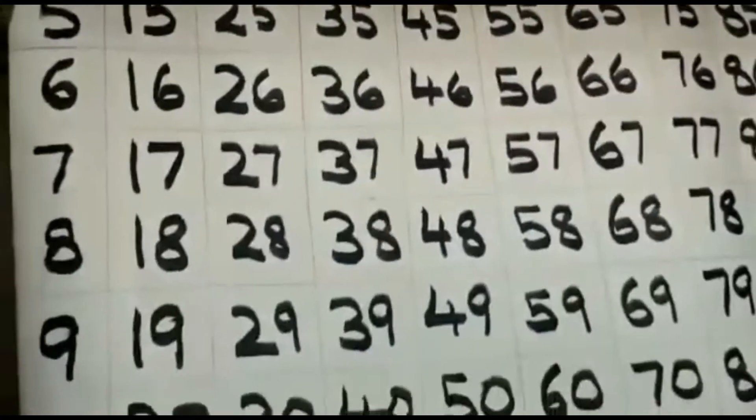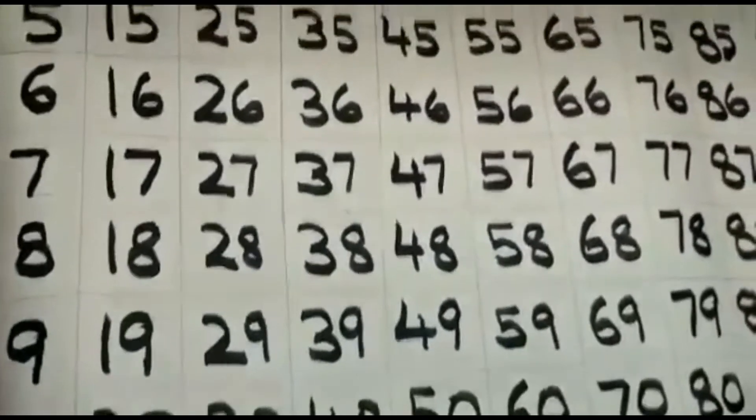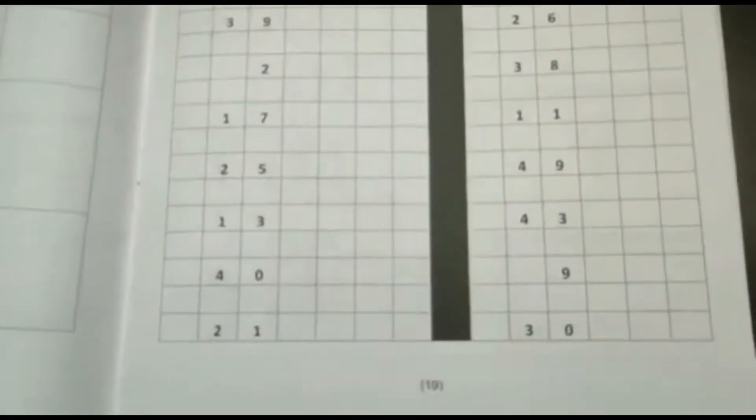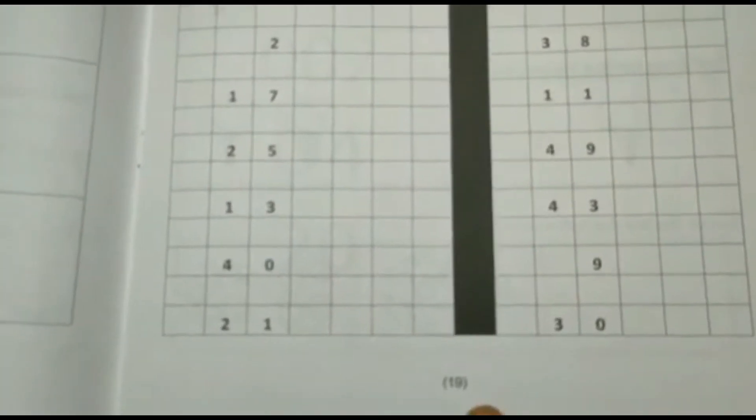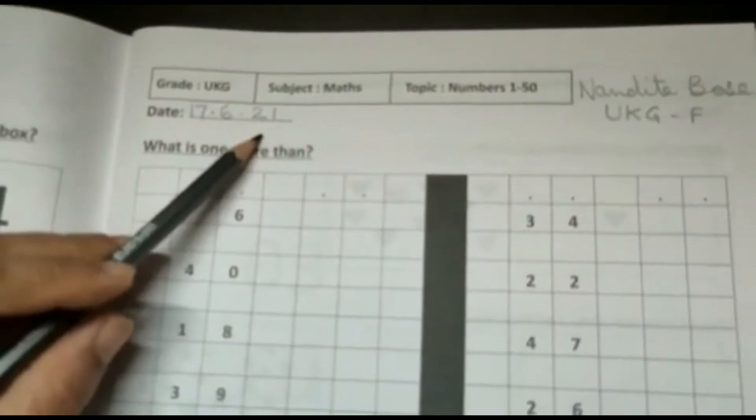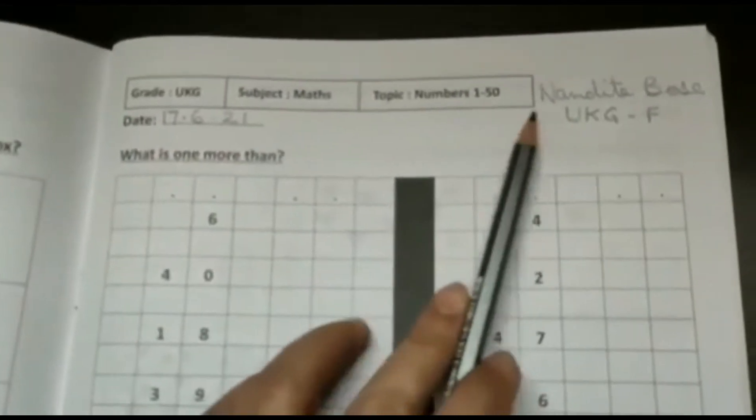Now, you will open your Maths practice book to page number 19. You will begin by writing today's date which is the 17th of June 21 and on the top right corner, you will write your name and section. The heading says, what is one more than.